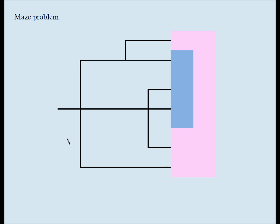This is a classic probability problem. You have a maze, you have two rooms — a blue room and a pink room — and these are paths leading to the rooms. You start here, you can go this way, go straight — you have three choices.